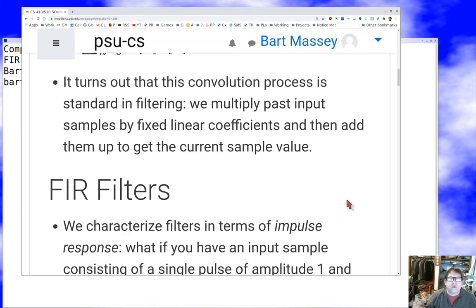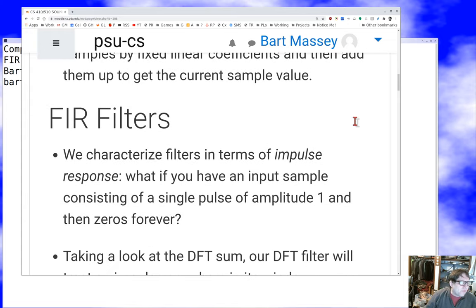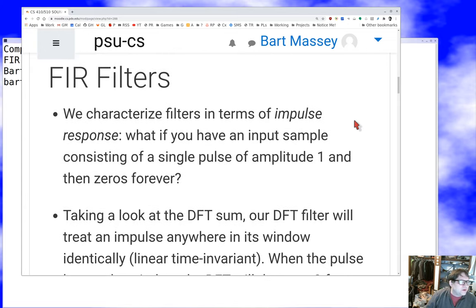This is the standard way we do filtering. For FIR filters, we take past input samples, multiply them by nice fixed linear coefficients, then add them up and get the current sample value. We characterize filters in terms of impulse response.